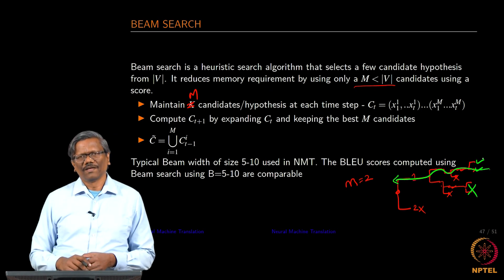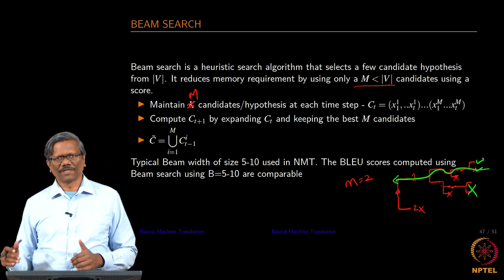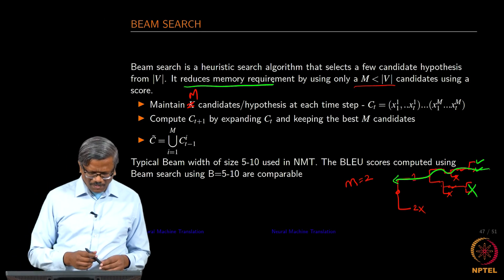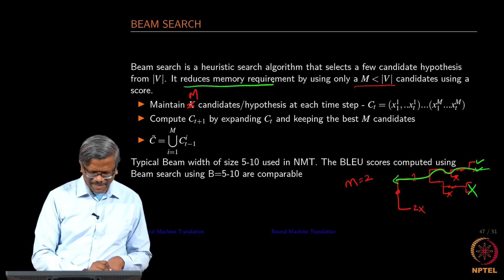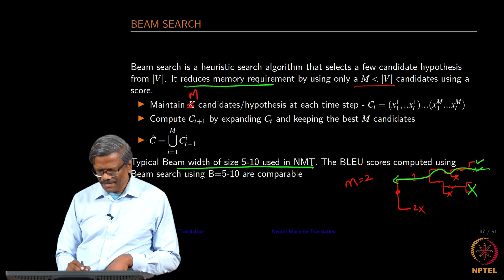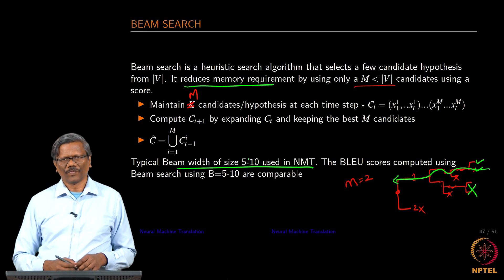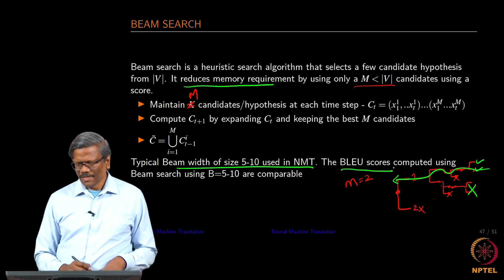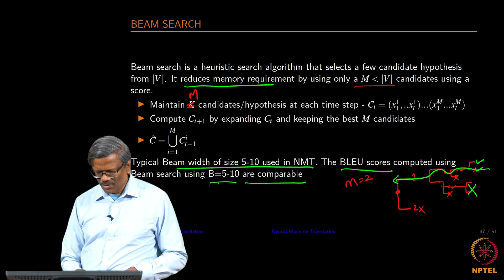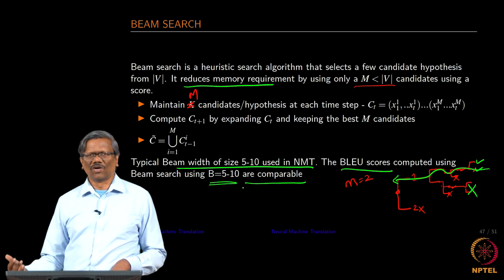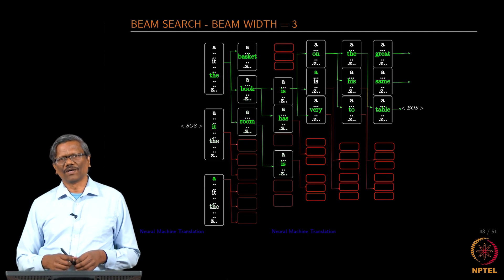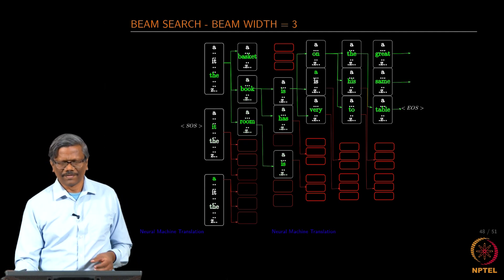This is a very standard heuristic algorithm setup which helps us in terms of reducing the memory size for picking up our translated sentences. In the case of machine translation, the beam size is usually around 5 to 10, and BLEU scores are computed using these 5 to 10. They are very comparable. Most of the time in neural machine translation you will see the beam size to be around either 5 or 10.